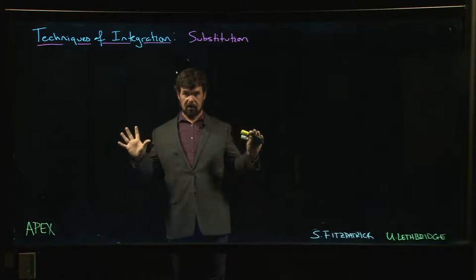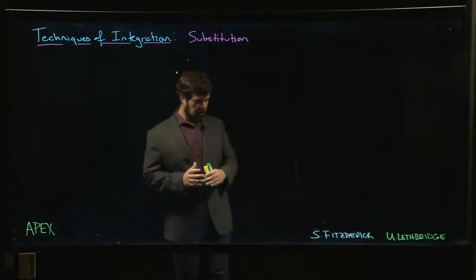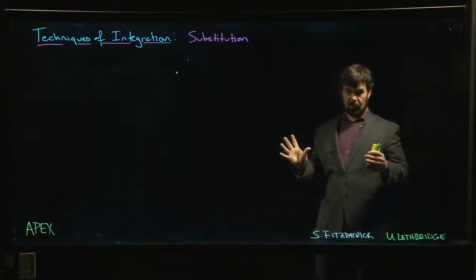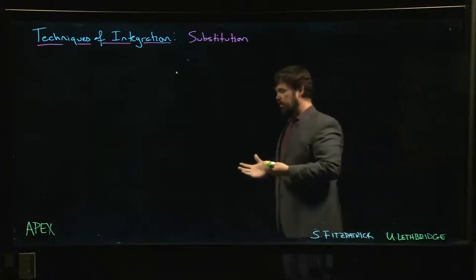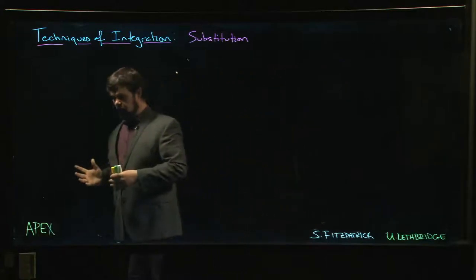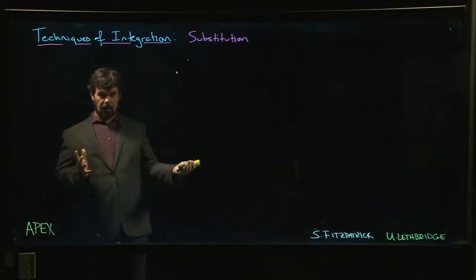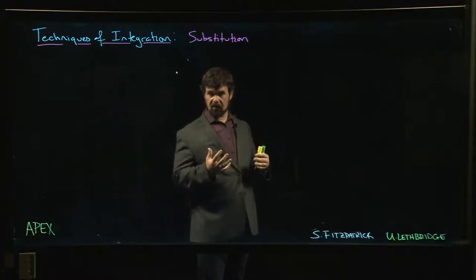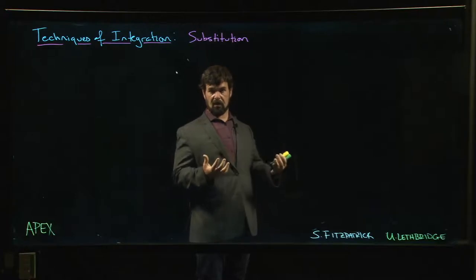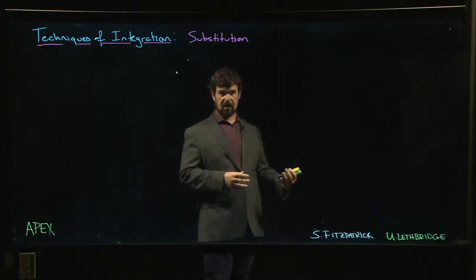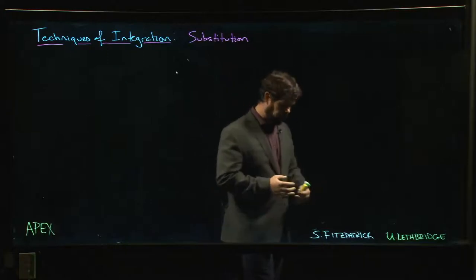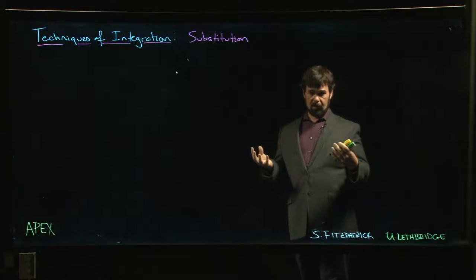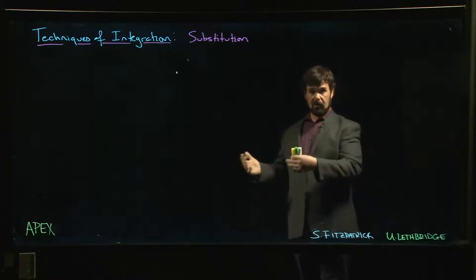We're going to look at our first technique of integration. Depending on your course, this might be the final topic of your Calculus 1 course or the very first topic of your Calculus 2 course. We know from the fundamental theorem of calculus — the second part — that efficient integration is about finding antiderivatives. We would much rather find an antiderivative and apply the second part of the fundamental theorem than mess around with Riemann sums. We just want to find the antiderivative, plug in the endpoints, and call it done.